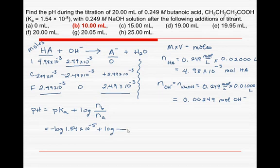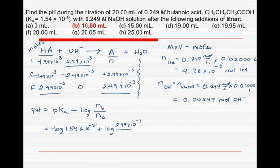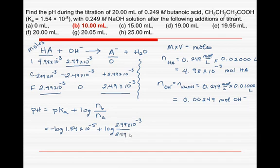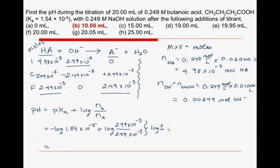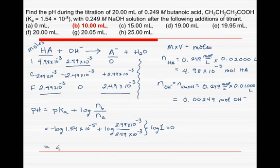So pKa would be the negative log of 1.54 times 10 to the minus 5, that is the Ka value of butanoic acid, plus the log. We seek out the number of moles of base, well this is my base here, it's 2.49 times 10 to the minus 3, and the acid is 2.49 times 10 to the minus 3, and this is going to give me a value of, this part here is the log of 1. The log of 1 equals 0, so this term goes away, and we're left with just 4.812, which is the pKa value.